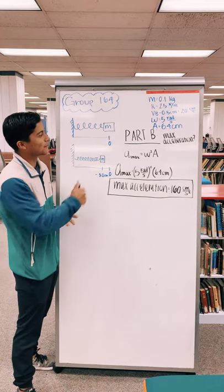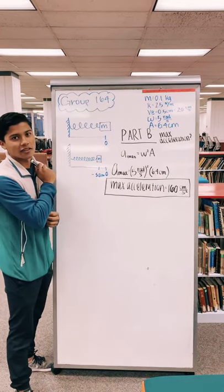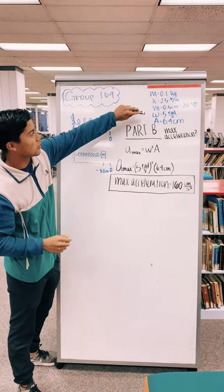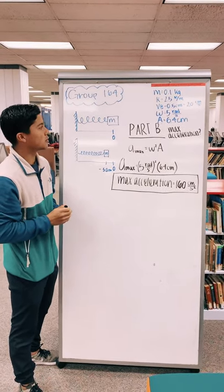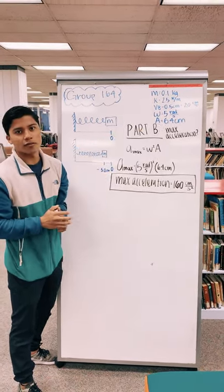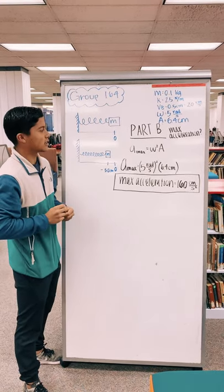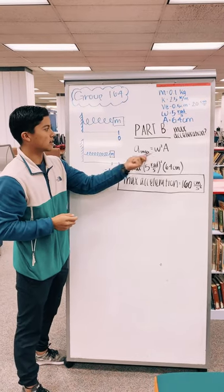So part B, we're solving for max acceleration. In part A we found omega which is 5 radians per second, and we also solved for amplitude which we got 6.4 centimeters. To find the max acceleration we use this equation: omega squared times amplitude.